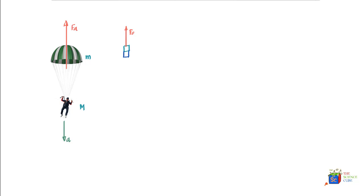So this box represents the parachute and this is the parachutist — one composite body. Let's now label all the forces acting on the composite system of parachute and parachutist. We have force F_A acting in the upward direction and force MG acting in the downward direction. This time M_G is actually (M + m) times G because we're considering the composite system.